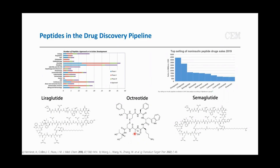The next topic will be different modifications. Peptides can be modified in many different ways and have many different downstream effects. Then I'll dive into click chemistry — we have not done click chemistry previously on our automated system, so we wanted to start exploring what we can achieve. A really popular peptide right now is semaglutide, which has been seen to have significant effects on weight loss. These peptides have not only natural amino acids in them, but also unnatural peptide modifications that are crucial for their therapeutic action.